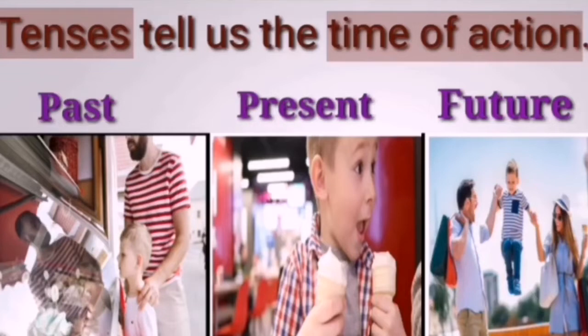The action of eating is done now, so this is called present tense. In the third example, you can see: 'The boy will go for shopping.' This action will take place in the future, so such types of actions are called future tense.